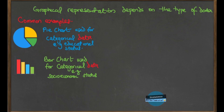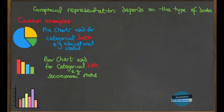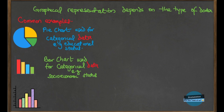Next on our list is the histogram. A histogram looks different from a bar chart in that all the bars are actually touching each other, to show that these are not separate categories — they are in a continuum. A histogram is used for continuous variables or numeric data, and it is used to show the distribution of a numeric variable.